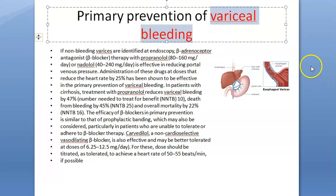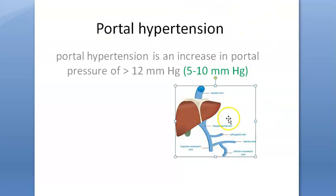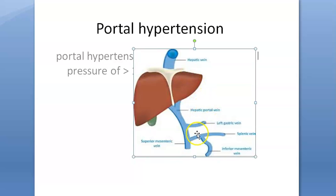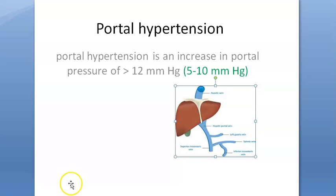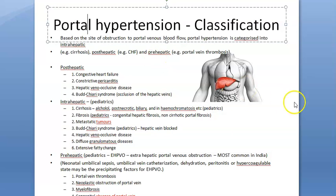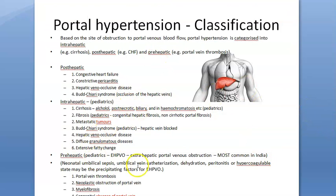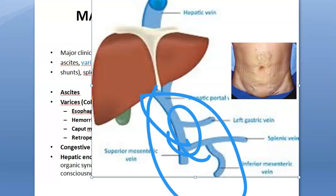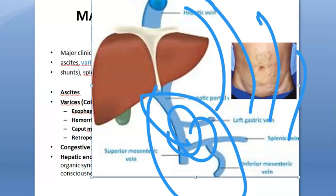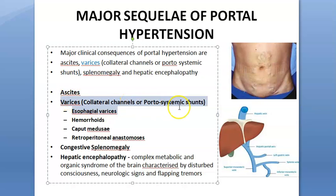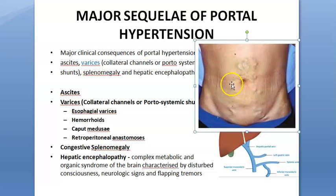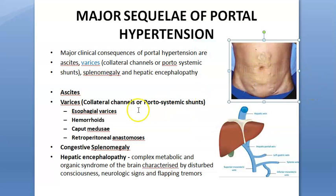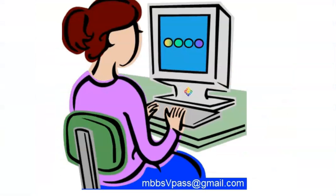In this video we want to look at variceal bleeding and how to manage it. We are looking at portal hypertension, which leads to a lot of portocaval anastomosis and varices that bleed. This happens due to pre-hepatic, hepatic, or post-hepatic causes like cirrhosis of the liver. Because of increased pressure in the portal vein, collaterals develop between the systemic and portal circulation — varices in the lower esophagus, hemorrhoids around the anal canal, caput medusae, and retroperitoneal anastomosis. When these start bleeding, that is variceal bleeding.